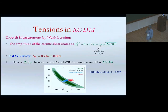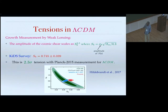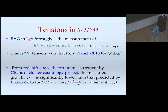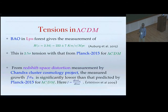Looking at growth measurements from weak lensing: the KiDS survey measures S8, which is related to sigma_8 — the amplitude of the matter power spectrum — and there is around 2.6 sigma tension between KiDS and Planck 2015 Lambda CDM, visible in the omega_M–sigma_8 plane. Additionally, the Lyman alpha forest BAO peak at redshift 2.34 gives an H measurement that has around 2.5 sigma tension with the Planck 2015 Lambda CDM prediction.